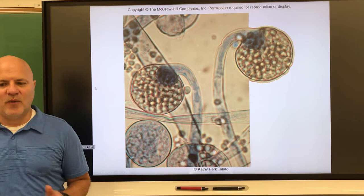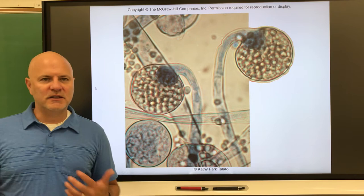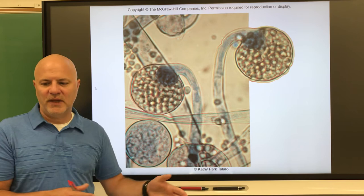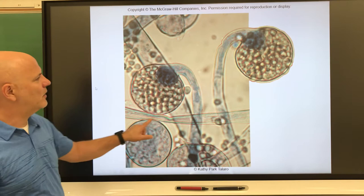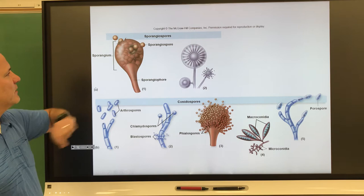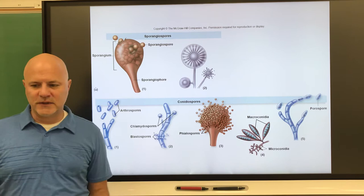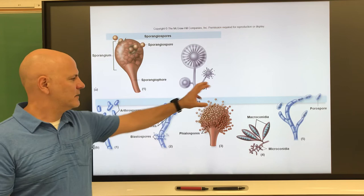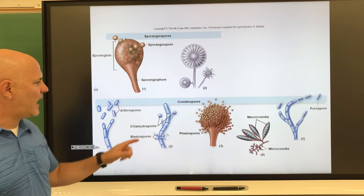Looking at reproduction — fragmentation is when a piece of the mycelium generates a whole new colony. This is a form of asexual reproduction. Another form is asexual spore formation. Sporangia spores are produced from a sac-like head called a sporangia. Conidia spores are free spores not contained by a spore-producing sac — they form by pinching off the tip of the hyphae.